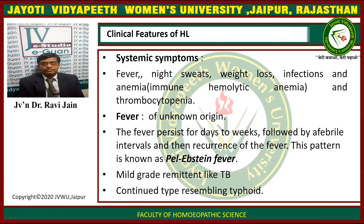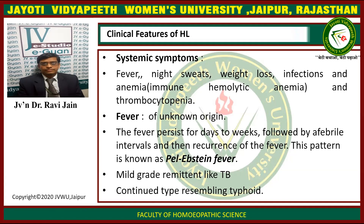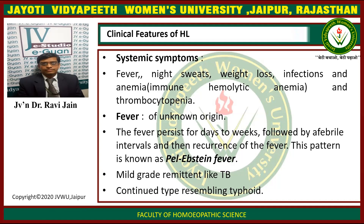Systemic symptoms of Hodgkin's lymphoma include fever, night sweats, weight loss, infections, and anemia — including immunohemolytic anemia and thrombocytopenia. The fever of unknown origin persists for days to two weeks, followed by afebrile intervals and then recurrence; this pattern is known as Pel-Ebstein fever. A mild-grade remittent fever similar to tuberculosis may also be present.